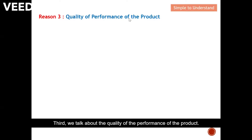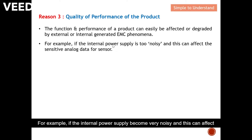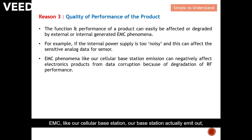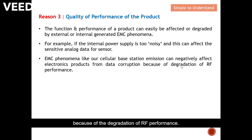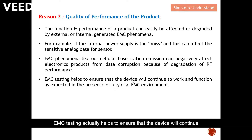Third, we talk about the quality and performance of the product. The function and performance of a product can easily be affected or degraded by externally or internally generated EMC issues. For example, if the internal power supply becomes very noisy, this can affect sensitive analog data from sensors. Similarly, our base station emissions can negatively affect nearby electronic products, causing data corruption due to degradation of RF performance. EMC testing helps ensure the device continues to work as specified in a typical EMC environment.